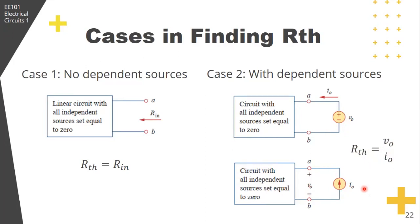Another thing to note is that RTH can be negative, as in V equals negative IR. This means the circuit is supplying power.